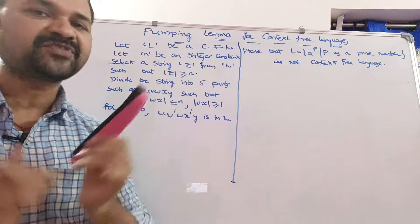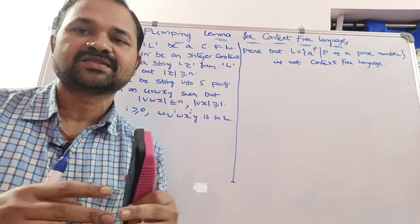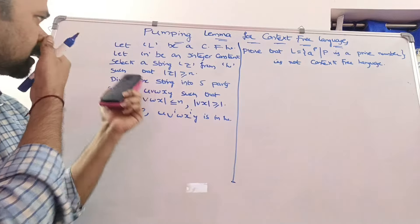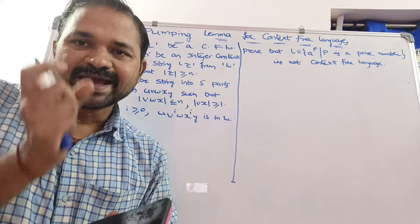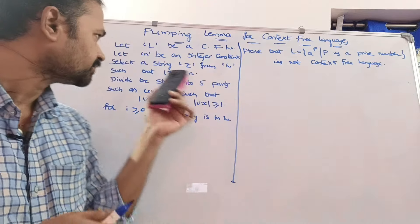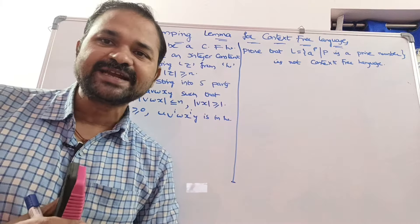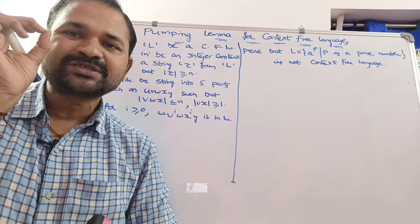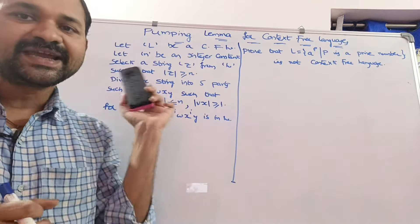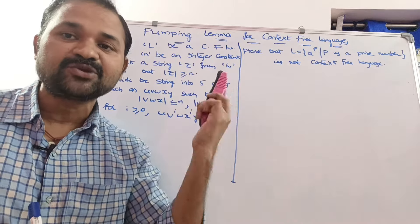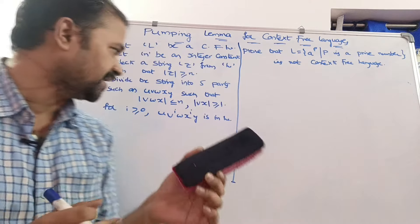Let L be a context-free language. Initially we have to assume the given language is a context-free language. Let n be an integer constant. We have to select a string z from the language L such that |z| is greater than or equal to n.